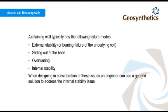A retaining wall typically has the following failure modes: external stability or bearing failure of the underlying soil; sliding out at the base; overturning; and internal stability. When designing in consideration of these issues, an engineer can use a geogrid solution to address the internal stability issue.